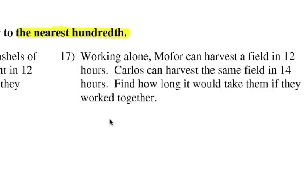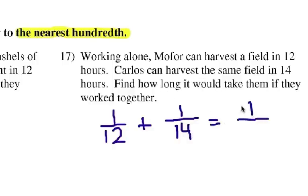The first person can do it by themselves in 12 hours, so that's going to be one over 12. That's his or her part of the job. And then we're going to add it to the part that Carlos can do by himself, and that's going to be one over 14 hours. And that's going to be one over the total together. How long would it take them if they worked together? Well, that would be one over x.